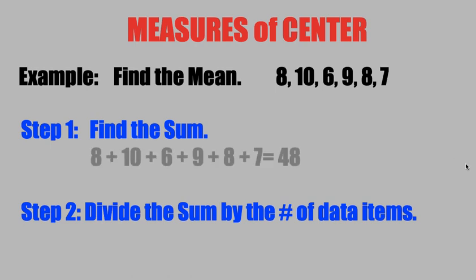Step one, you're going to find the mean, which means to add up all the data set items. Your sum is now 48.